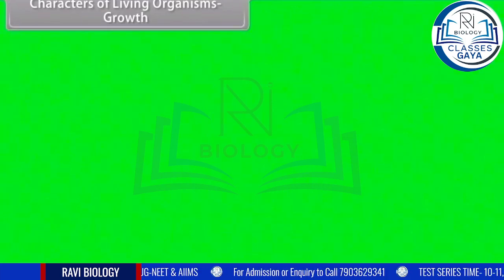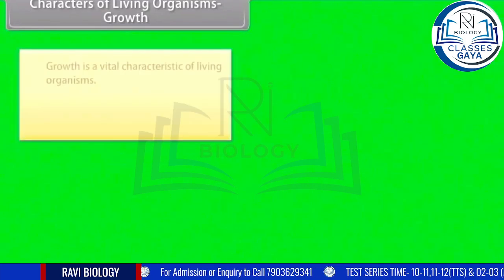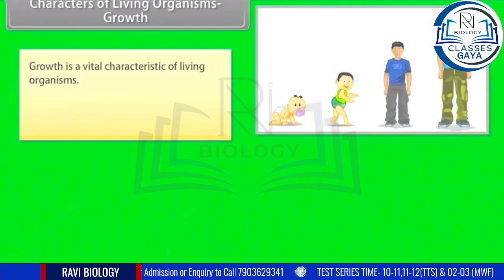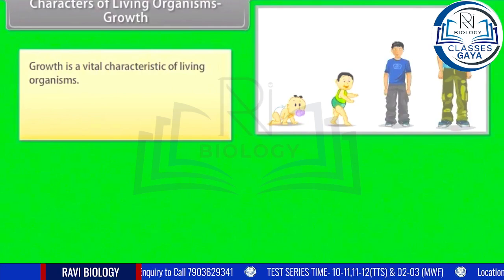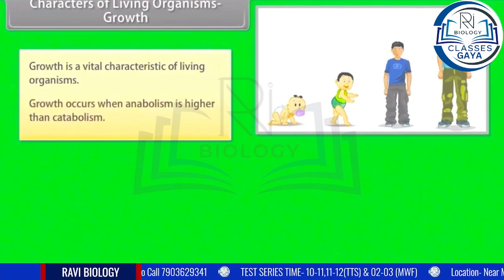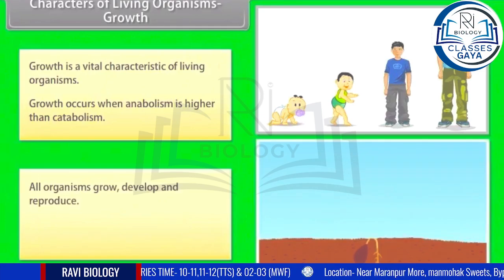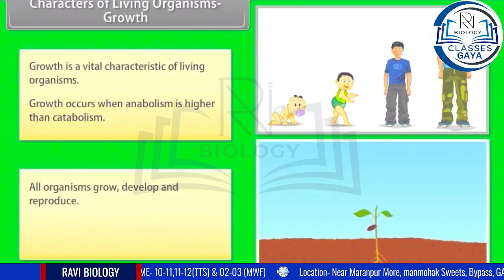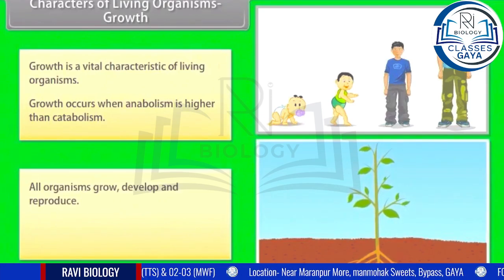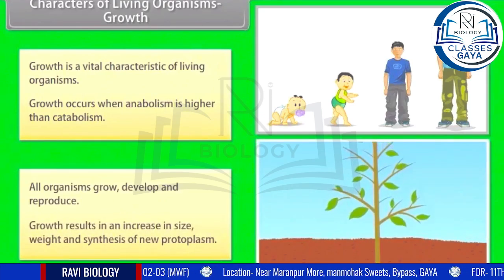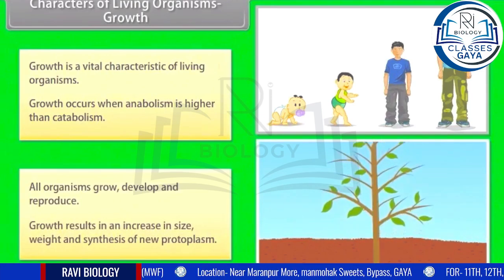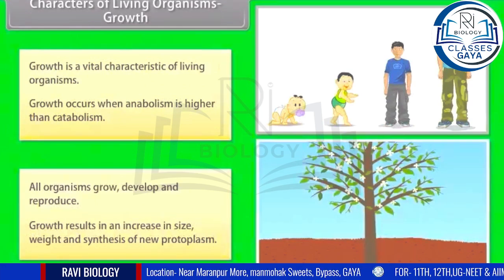Characters of living organisms — Growth: growth is a vital characteristic of living organisms. Growth occurs when anabolism is higher than catabolism. All organisms grow, develop, and reproduce. Growth results in an increase in size, weight, and synthesis of new protoplasm.